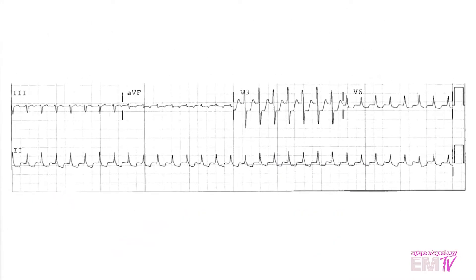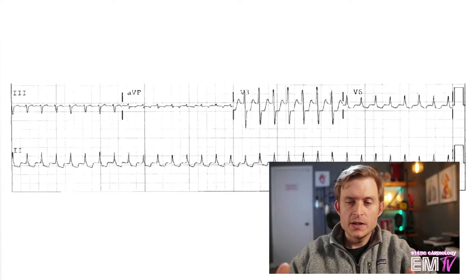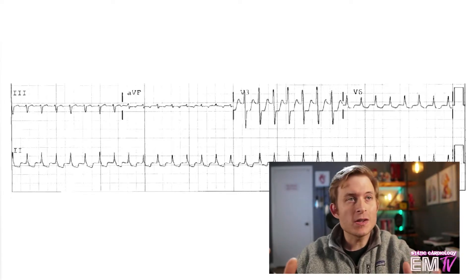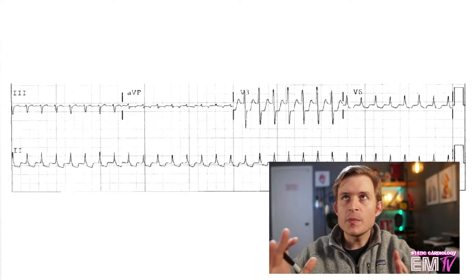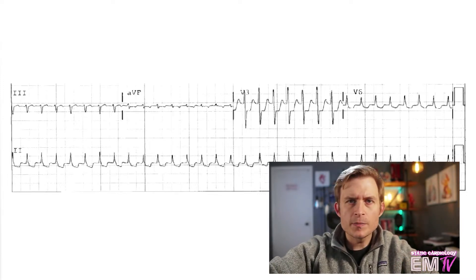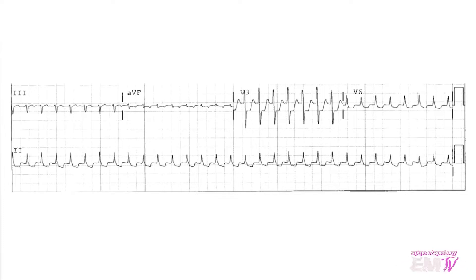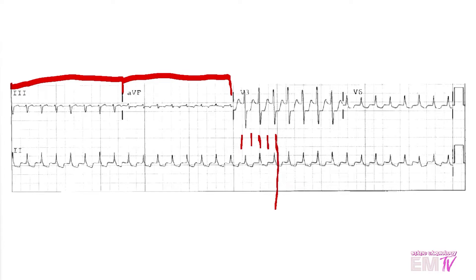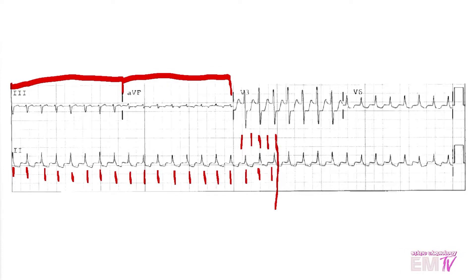One of the first things I do when I'm identifying rhythm is I determine the rate. We can still determine the rate using this 10-second strip by breaking it into a 6-second strip first. I take two lead groupings — each one is 2.5 seconds long — and then I count five large boxes beyond that. Now that I've made a 6-second strip, I'll count the R waves and determine my rate. I'm counting 19 R waves, which equals approximately 190 beats per minute.